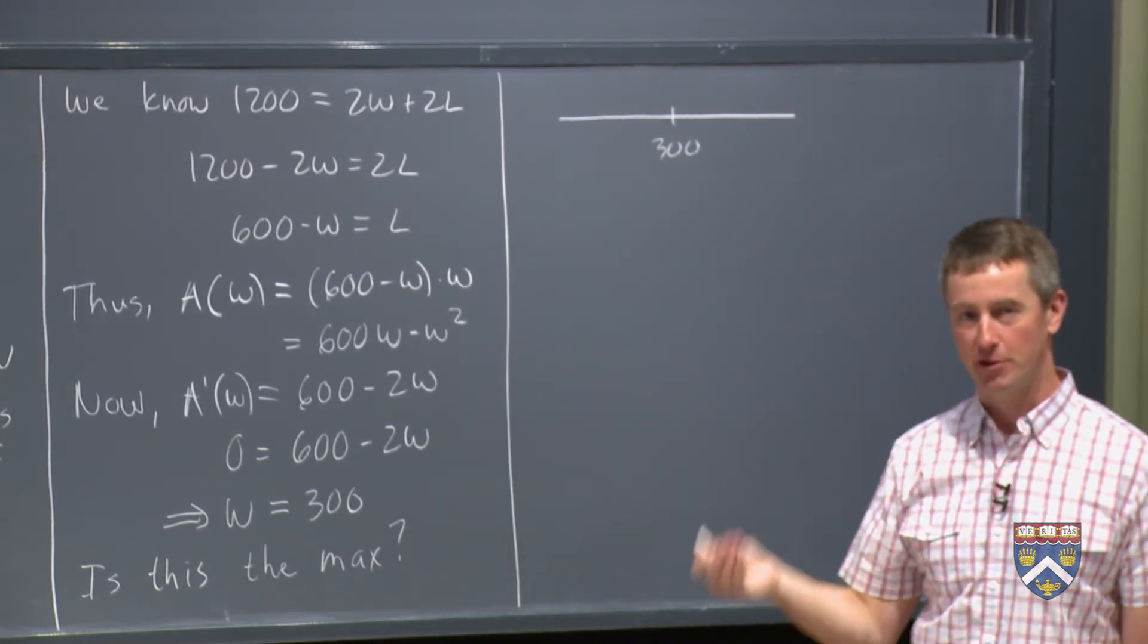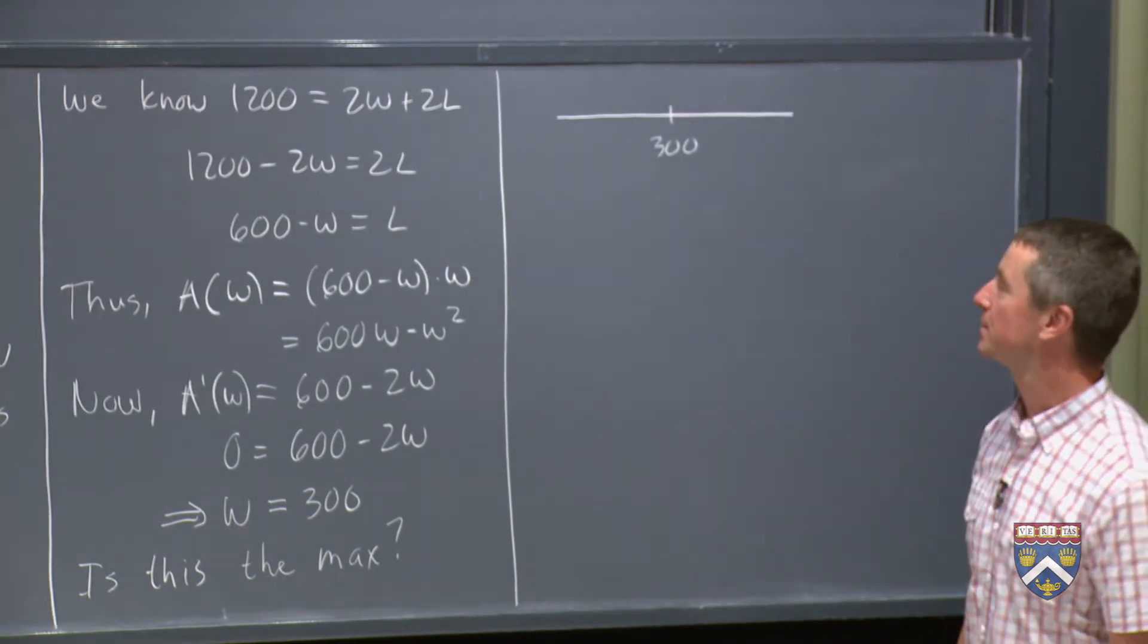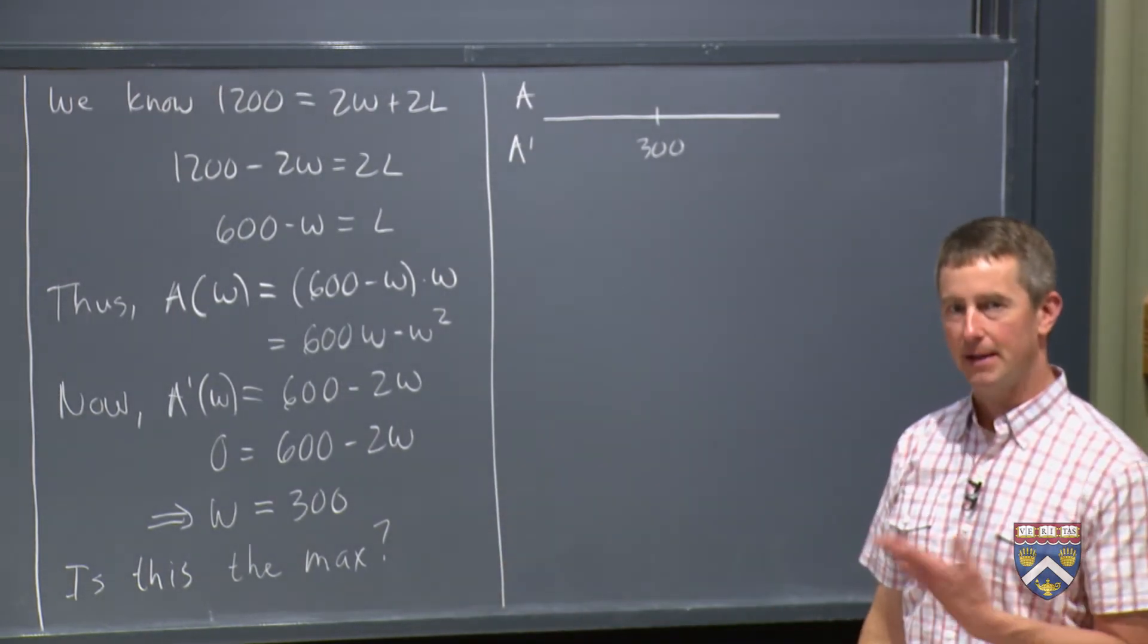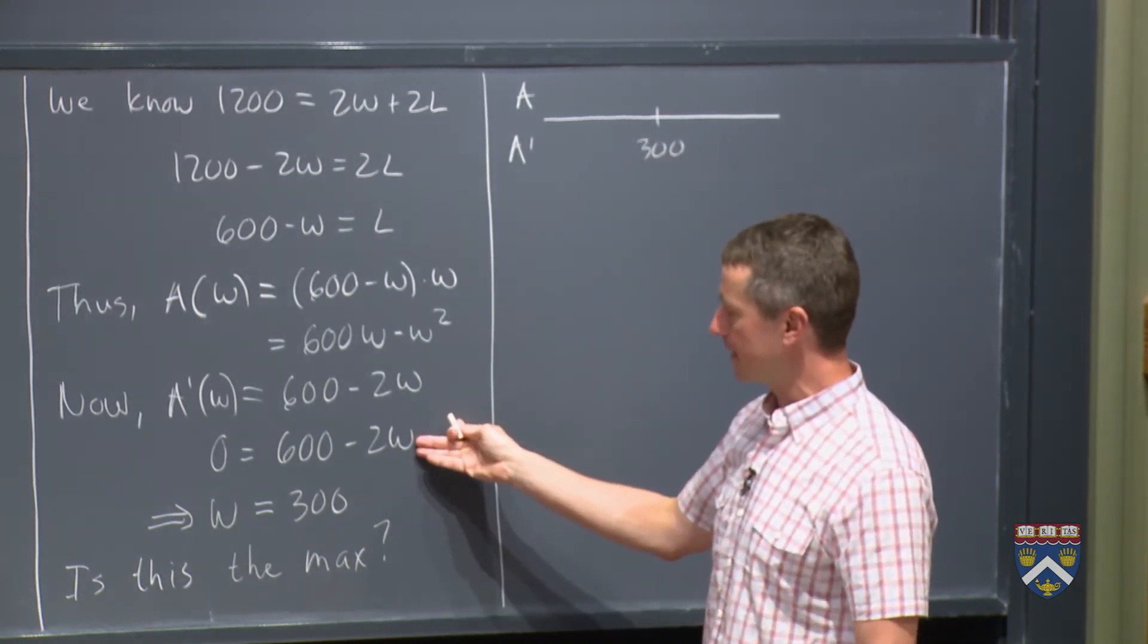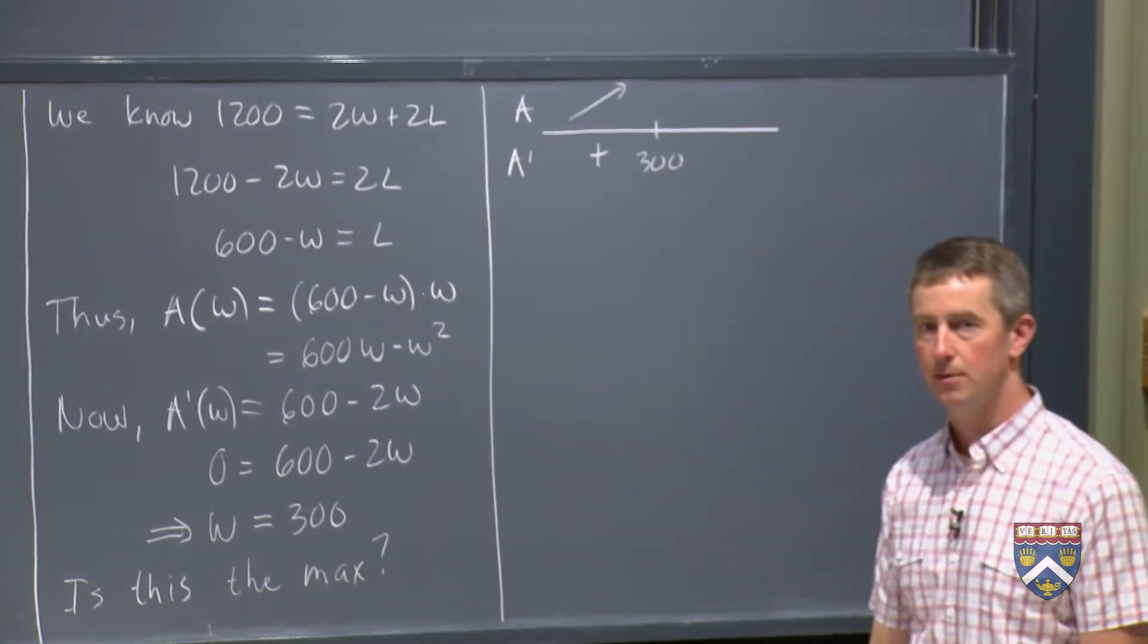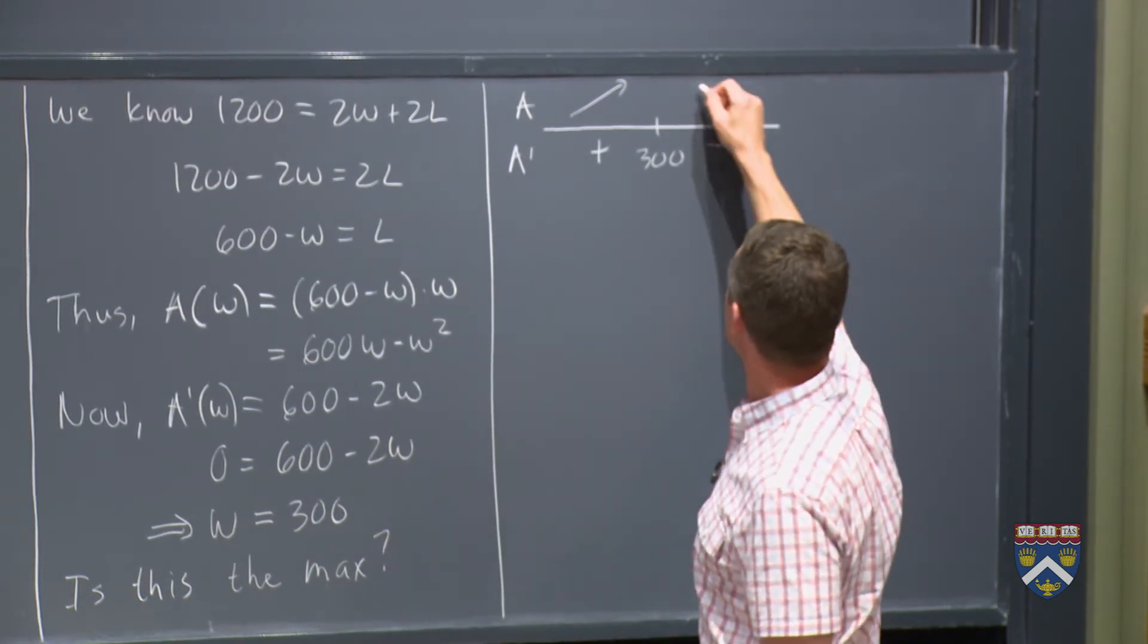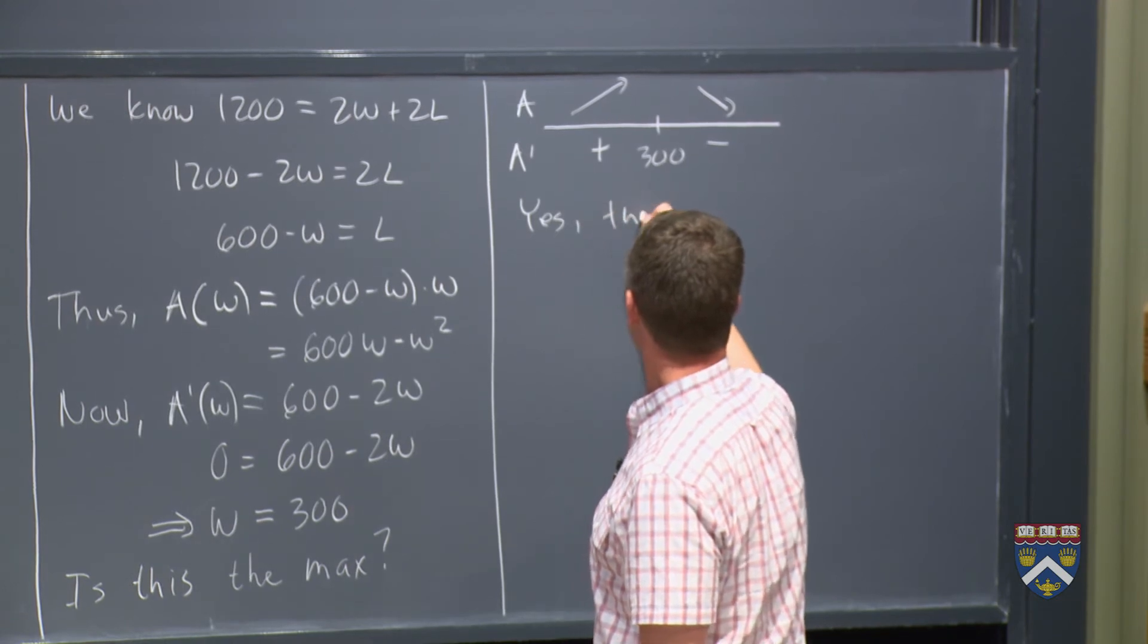Some books call this number line the first derivative test, by the way. I don't think we've used that language yet, but if you see it, that's what it's referring to. So I'm not going to write out all of the things that we're plugging in here because this is not so hard. If I pick a number less than 300, like 0, and I plug it in here, I get a positive, which means A is increasing. Is that what we were hoping for? Sure is. Pick a number out here, like 400. 600 minus 2 times 400 is a negative. So yes, this is the max. Exactly what we wanted.